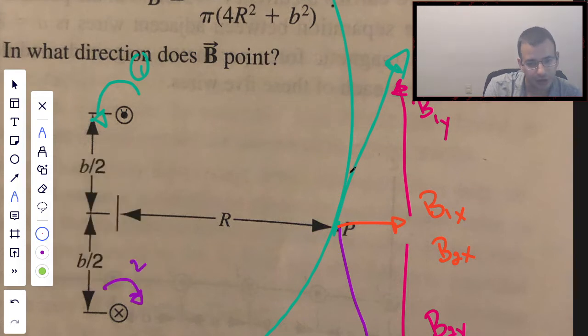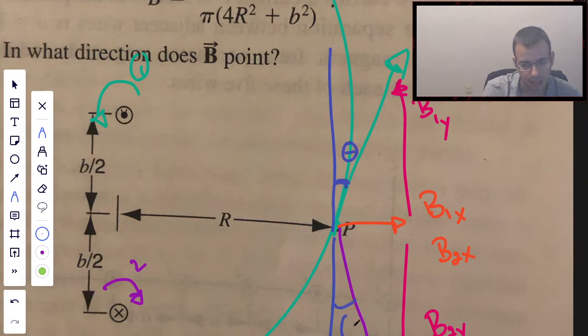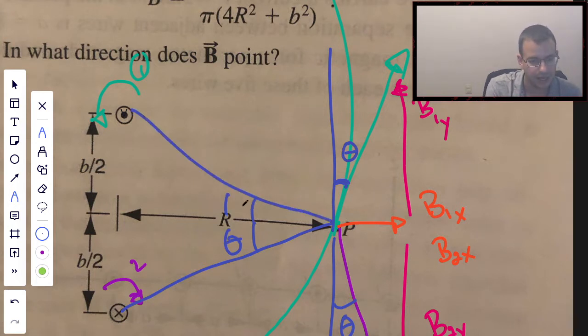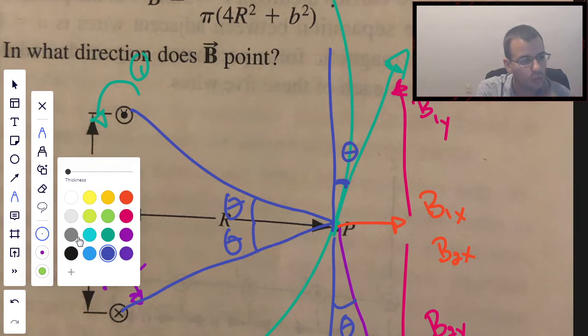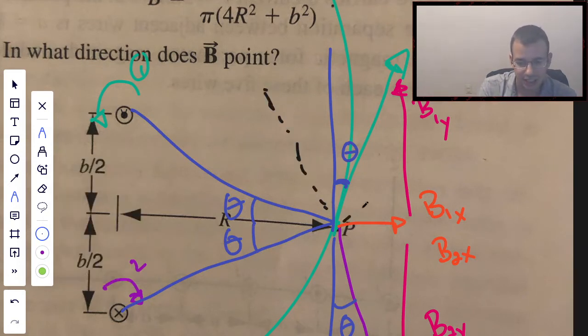There's going to be magnetic field from the top, which I'm going to call 1, in the x direction, and I'm going to add that to magnetic field 2 in the x direction. The angles here, this is going to be theta, this is going to be theta, where that is the same angle as this theta right here.